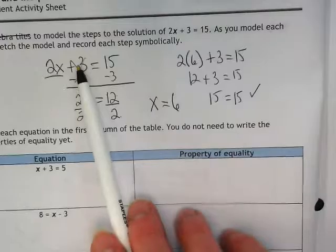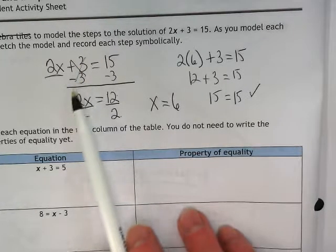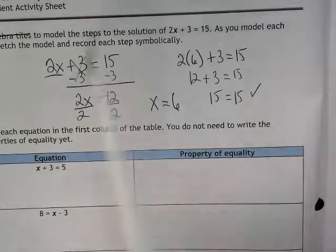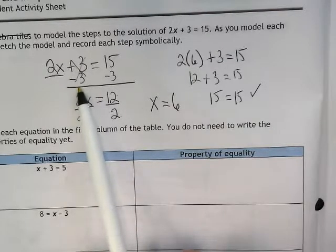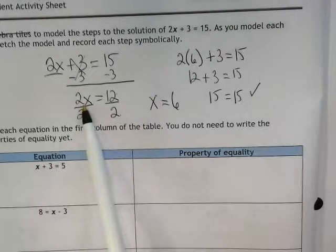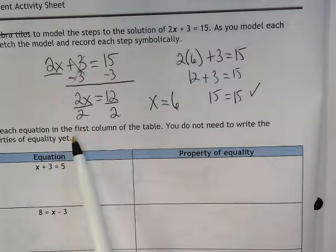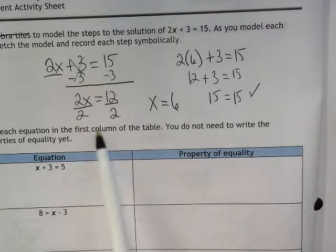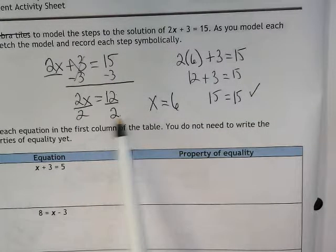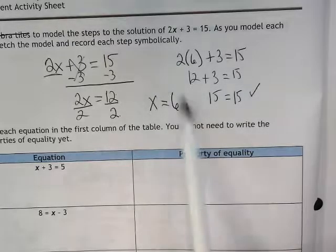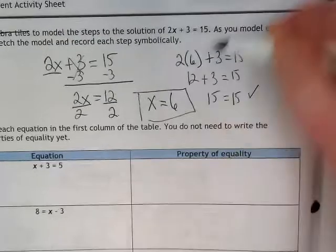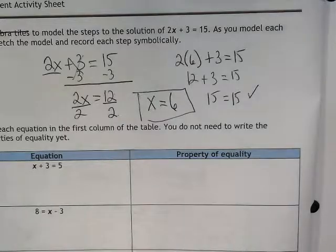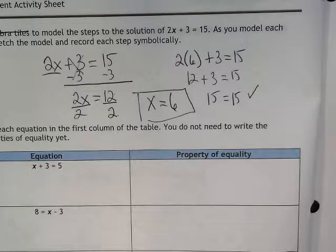So here we saw addition, and we used subtraction. We had multiplication, and we used division. Since we did both of those things to both sides of the equal sign, we were able to come up with our answer. We plugged it back in to make sure that it works, and so now we know that x has to be 6.